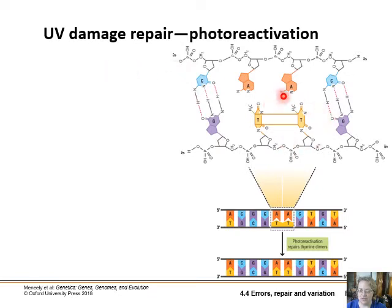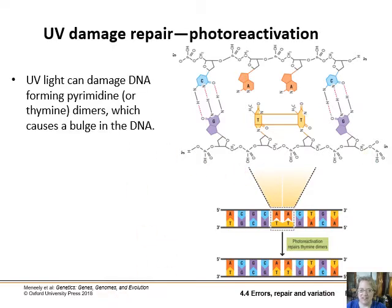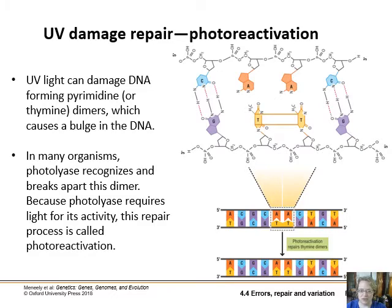There's also UV damage repair called photoreactivation. UV damage causes thymine dimer pairs, where thymines link together instead of to the opposite adenines. In many organisms, there is an enzyme that sees this and breaks it apart, but you do need light to repair UV damage — so light harms your DNA, but you also need it to fix your DNA.